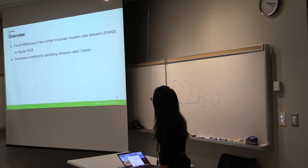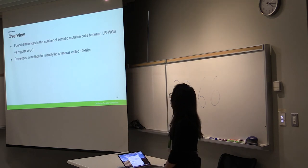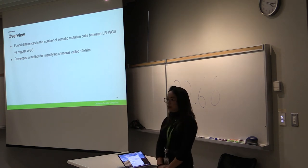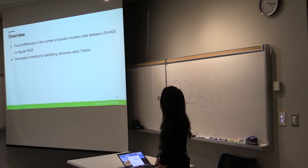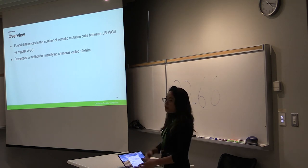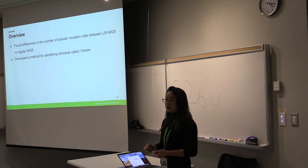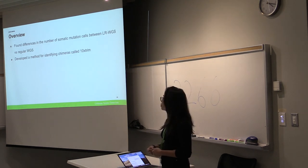And so conclusions. In the first part, I mentioned that we found differences in the number of somatic mutations being called in linked reads versus regular reads. We found that a lot of these reads seem to be showing chimeric traits. And we developed a novel tool called 10X Trim in order to identify these chimeras. And it was effective in reducing the number of false positives.